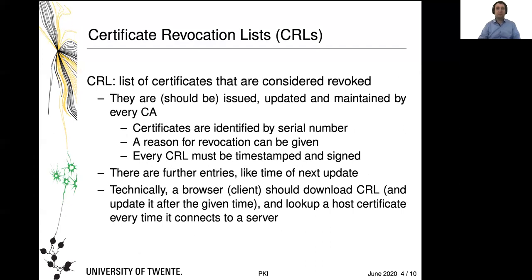The simplest form are lists. A list of certificates that are considered revoked can be published by every CA. They should be updated and maintained at regular intervals. There should be ways to identify a certificate, for example by a serial number — that is why the serial number field is important in a certificate. Ideally, you should also give a reason for the revocation, though sometimes business secrets prevent this. A certificate revocation list must have a timestamp and it needs to be signed by the CA, because otherwise you have no assurance that no one is trying to get you to use a forged certificate revocation list.